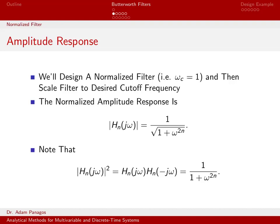As mentioned earlier when going over the outline, our approach is going to be to analyze what we call a normalized filter first. So first we're going to design what we call a normalized filter — a Butterworth filter whose cutoff frequency is equal to 1. Once we understand the properties and characteristics of this filter, we'll learn how to scale it up to the cutoff frequency we actually desire. So we're going to let ω_c equal 1.